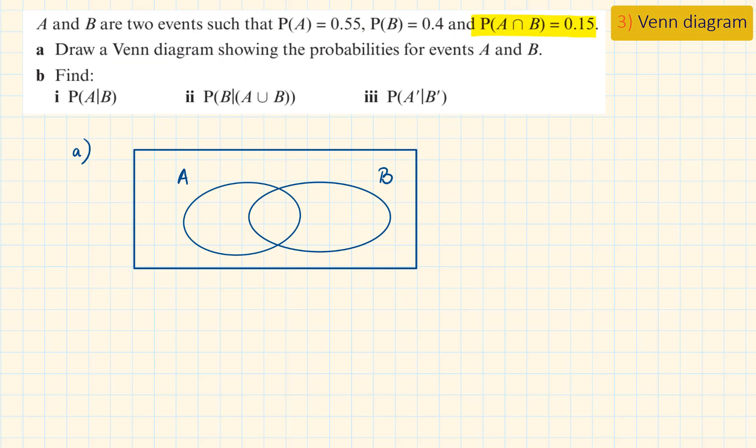Their intersection is 0.15, probability of A is 0.55, therefore the missing part in A is 0.4. The probability of B is 0.4, subtracting the intersection, we have 0.25. Then the complement of the union, which is not A and not B, 1 minus the sum that we have already completed, 0.4 plus 0.15 plus 0.25, and that is 0.2.